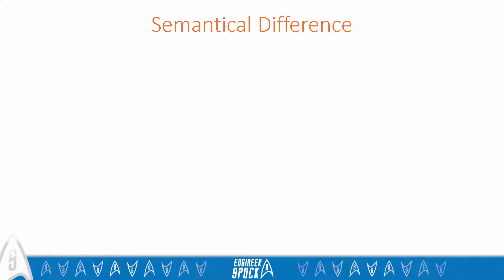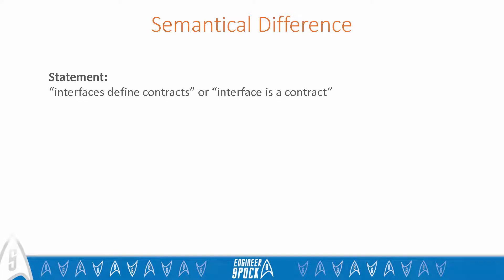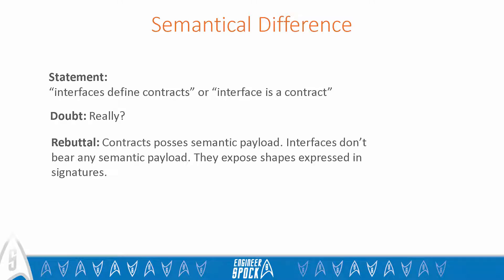Let's talk about the semantic payload of abstract classes and interfaces. Very often you can hear that interfaces define contracts. This statement becomes more convincing with the fact that we treat interfaces and contracts equally in WCF. In WCF, a service contract can only be represented by an interface. In the real world, including outside of programming, contracts have some semantic payload.